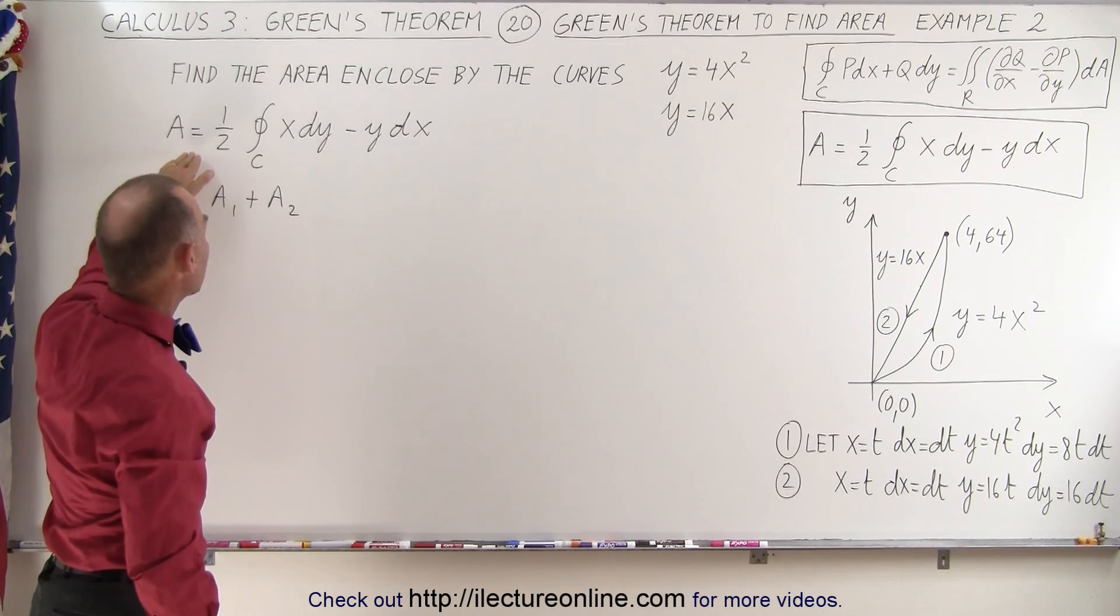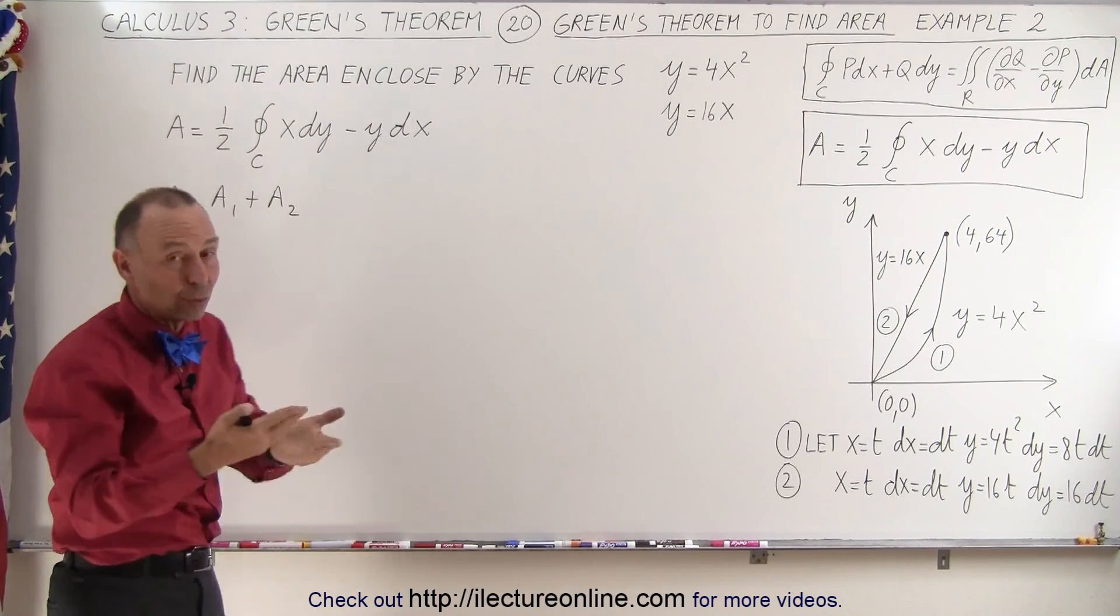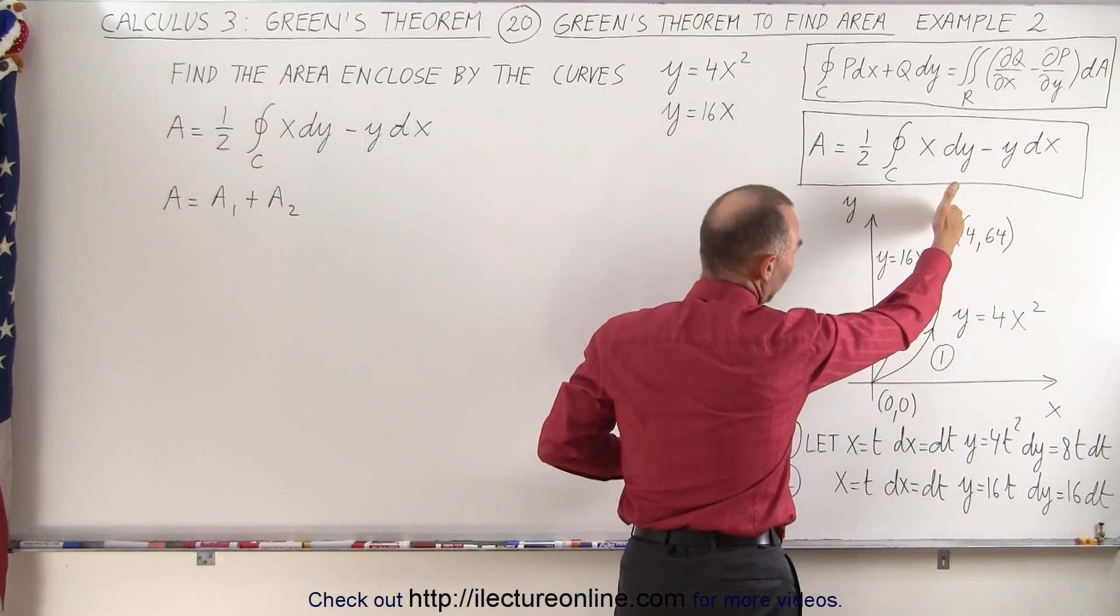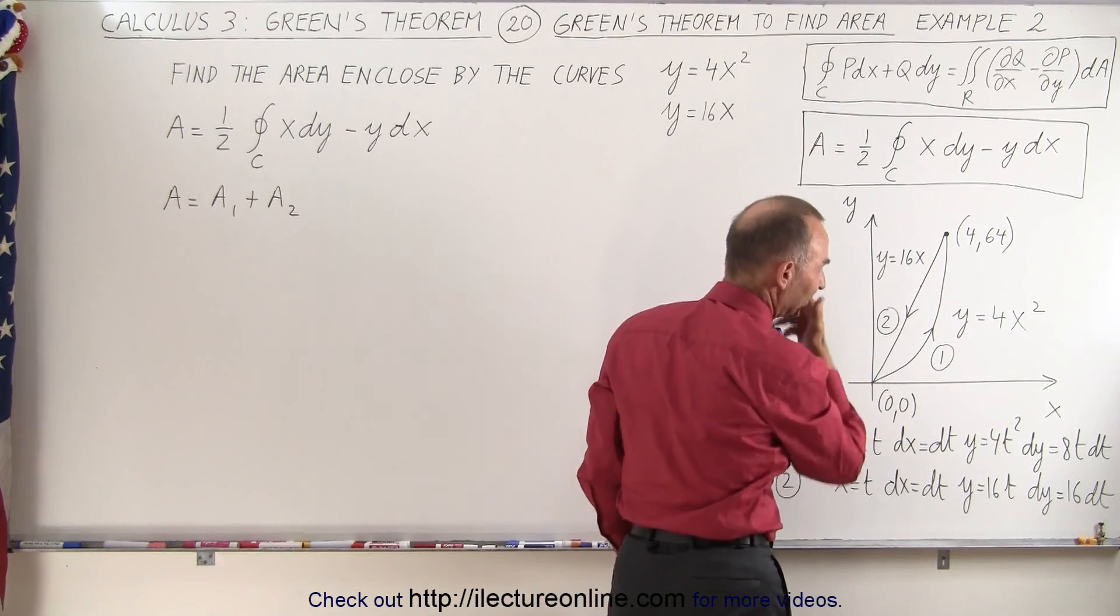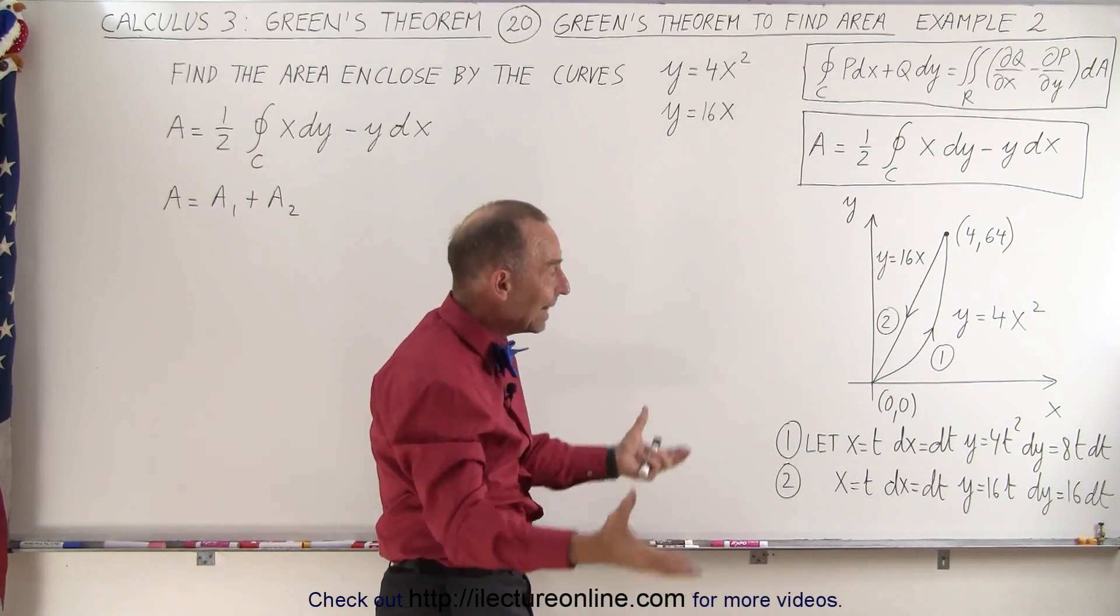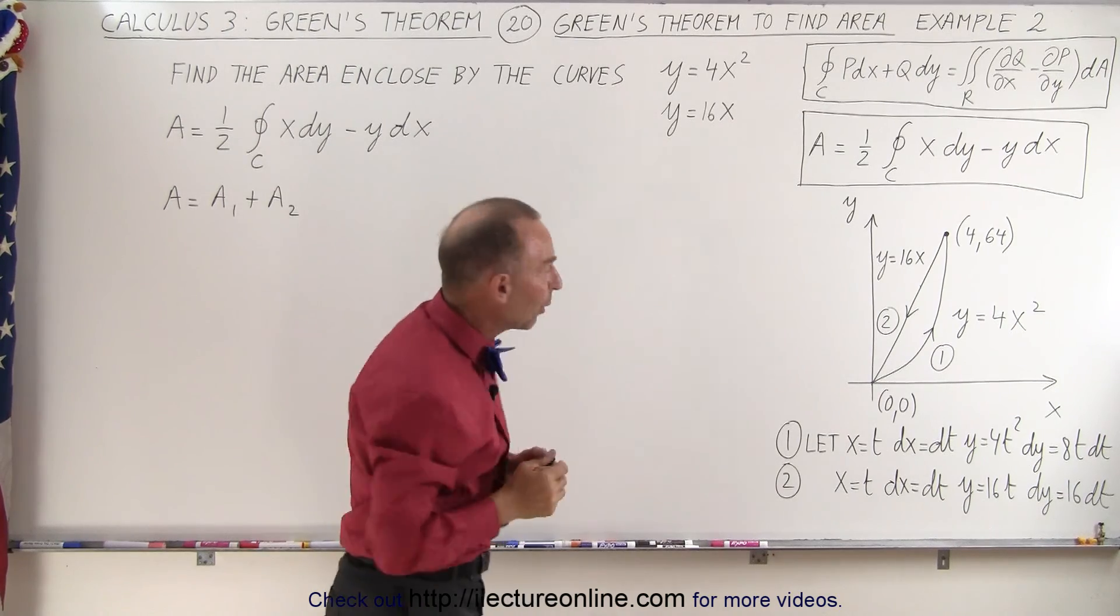Now we start out with the equation here, but then we realize there's really two lines. There's the curve, y equals 4x squared, and the straight line, y equals 16x. So it looks like we're going to have to integrate twice and add those two together. And that's indeed what we're going to do.